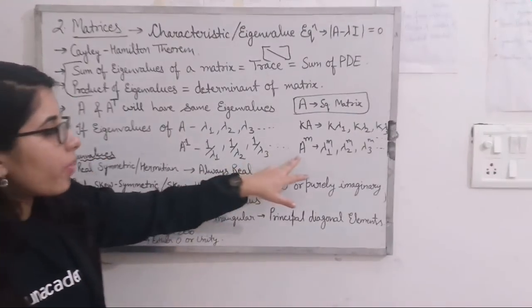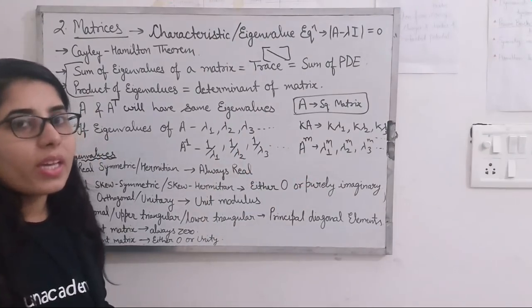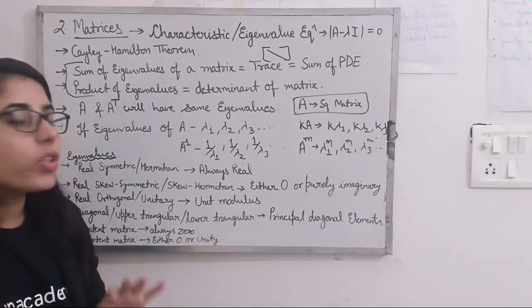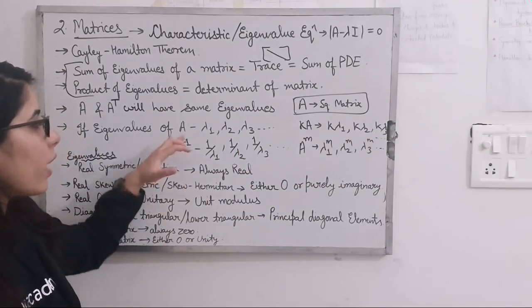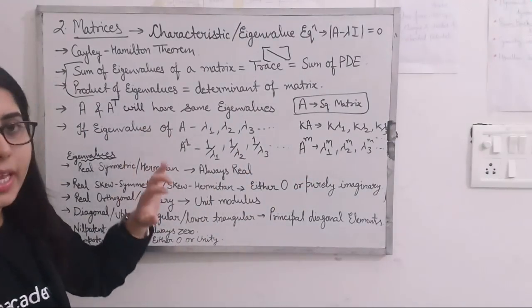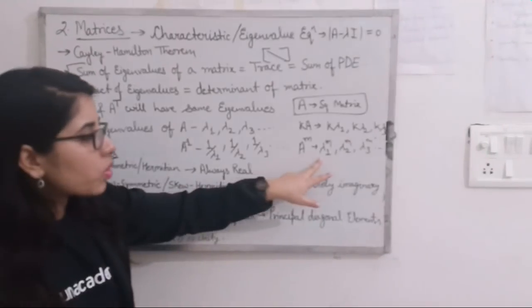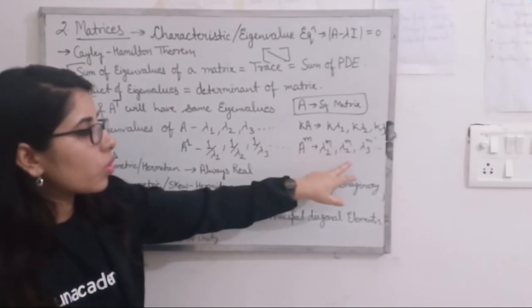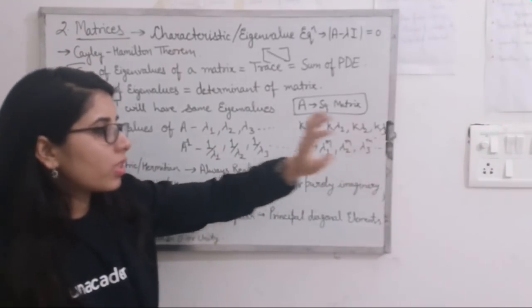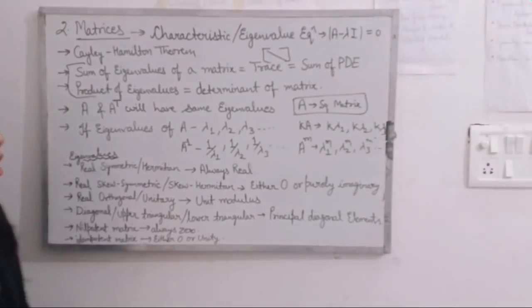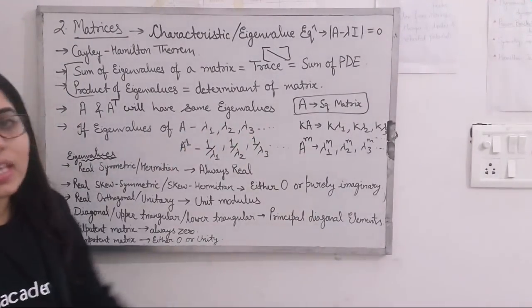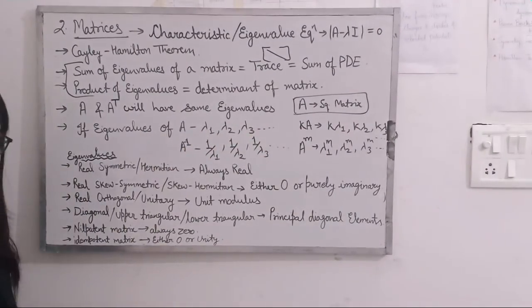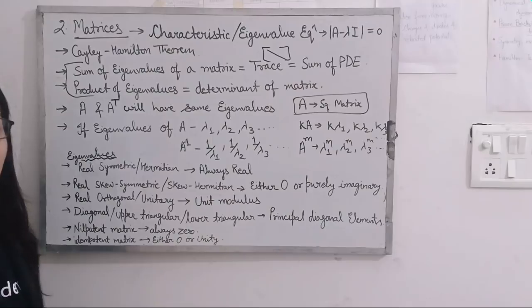Similarly, for matrix kA, the eigenvalues will be k times lambda 1, k times lambda 2, k times lambda 3 — because A was multiplied by k. For A to the power m, the eigenvalues will be lambda 1 to the power m, lambda 2 to the power m, lambda 3 to the power m. So in a similar way, you can find the eigenvalues for any new form of a matrix.